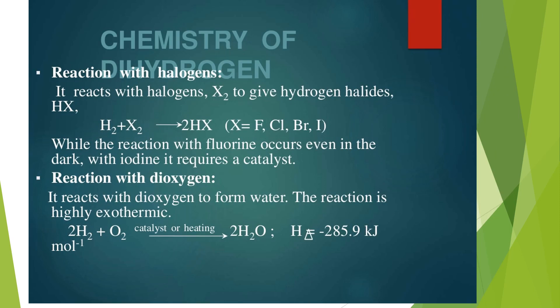Chemistry of hydrogen: Reaction with halogens. It reacts with halogens to give hydrogen halide: H2 plus X2 gives 2HX. The reaction with fluorine occurs even in the dark, while with iodine it requires a catalyst.